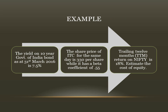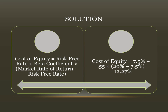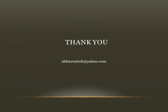Example: the yield on 10-year Government of India bond as at 31st March 2016 is 7.5 percent. The share price of ITC for the same day is rupees 330 per share, while it has a beta coefficient of 0.55. The market rate of return on Nifty is 18 percent. Estimate cost of equity. Cost of equity equals risk-free rate plus beta coefficient multiplied by market rate of return minus risk-free rate. Cost of equity equals 7.5 percent plus 0.55 multiplied by 18 minus 7.5, that is 12.27 percent. Thank you.